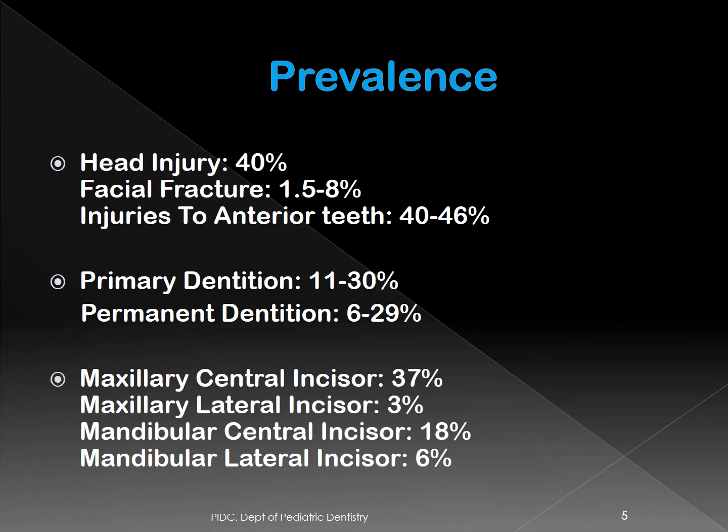Looking at the prevalence of traumatic injuries in children: head injury is quite common at 40%, and injuries to the anterior teeth are very common at 40–60%. Because a child's head is proportionally larger compared to the body, when they fall, the injury is mostly to the head and teeth — that is why it is important to know about dental traumatic injuries in children.